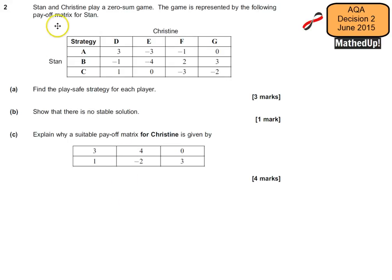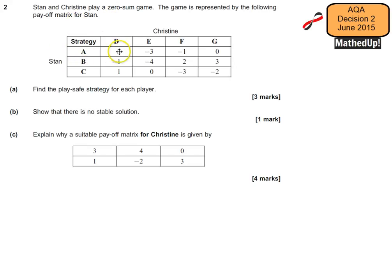In this question we've got Stan and Christine who are playing a zero-sum game, represented by this payoff matrix for Stan. So that means that this 3 here represents a gain of 3 for Stan and, because it's a zero-sum game, it represents a loss of 3 for Christine.